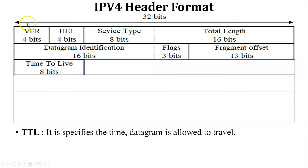The next field is TTL — Time to Live. TTL contains 8 bits of data and specifies the time a datagram is allowed to travel in the network. For example, if TTL is set to 180, at every hop the TTL value is reduced by one. If the TTL value reaches zero before the packet reaches its destination, the packet is discarded from the network. The purpose of TTL is to ensure the packet reaches its destination before the timer expires.